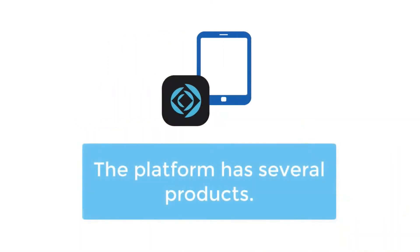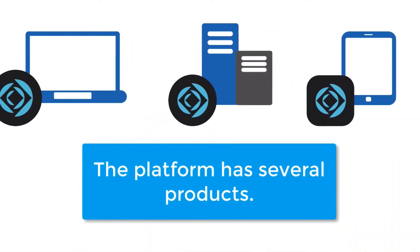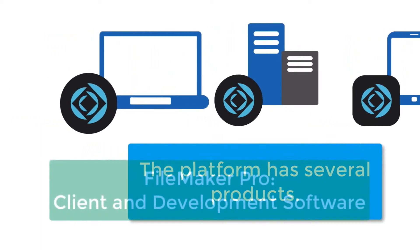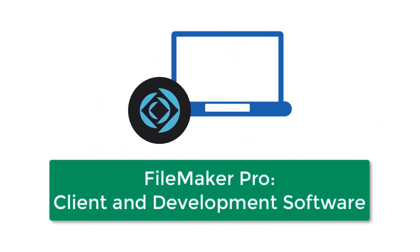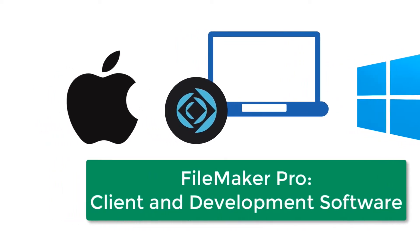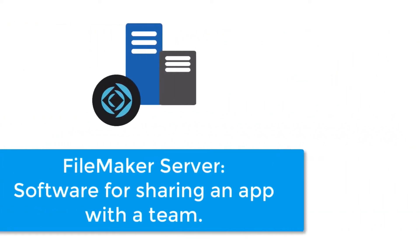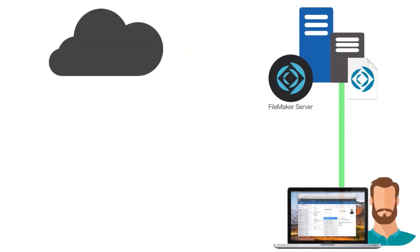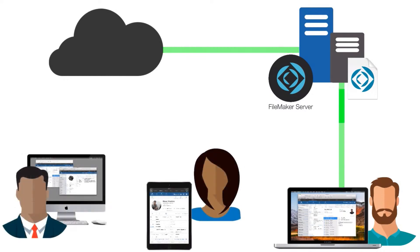The FileMaker platform is comprised of several different products, which include FileMaker Pro — the client and development software that runs both on Mac and Windows platforms. There's also FileMaker Server, a separate software package designed to host or share your FileMaker solution on an office network or across the Internet.